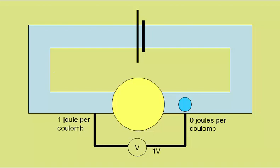And so the voltmeter gives a reading of one volt, which is one joule per coulomb minus zero joules per coulomb. One joule has been transferred for every coulomb of charge that passes the lamp.